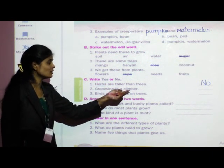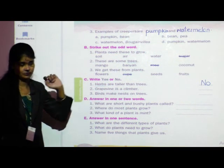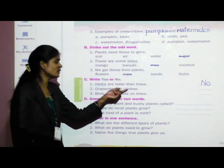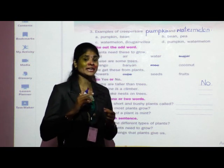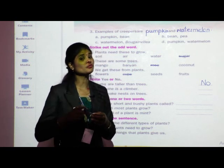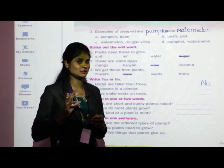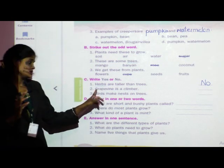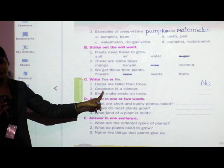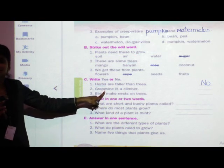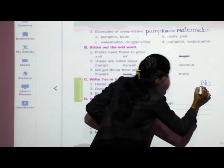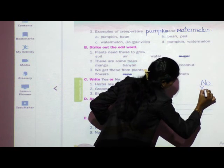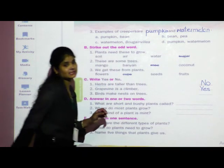Second: grapevine is a climber. Climbers are plants which need external support for their growth. Grapevine is a climber because it needs support for its growth. So write: Y-E-S — yes.